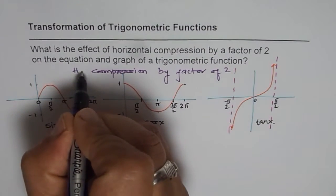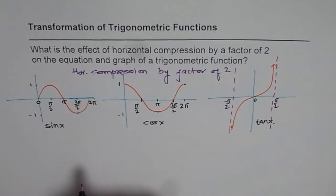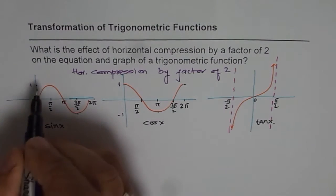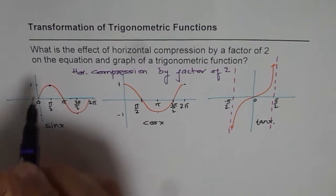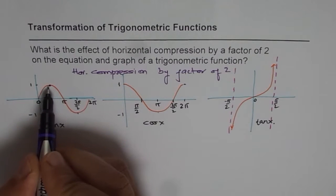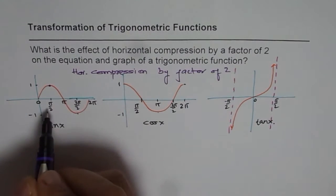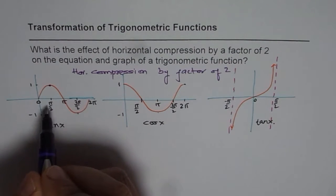Horizontal compression, it really means that every point on the graph gets compressed horizontally by a factor of 2, means their x value gets multiplied by half.